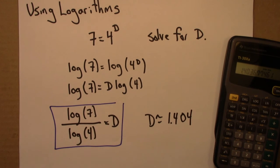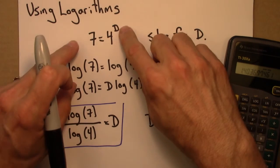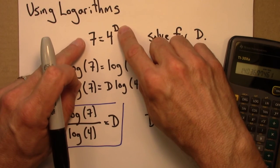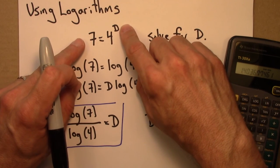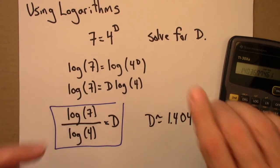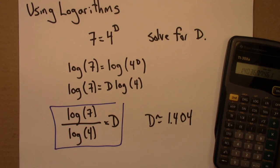So the key for these types of problems: when you have a variable in the exponent, take the log of both sides, carefully apply your logarithm properties, and then isolate the variable.